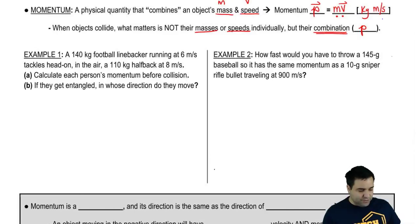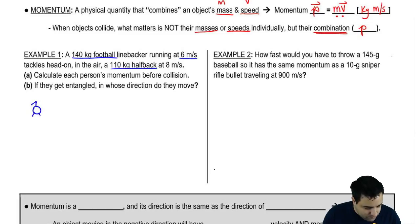So we're going to do two quick examples here just using that equation. So I have a 140 kg football linebacker running at 6 meters per second, and he's going to tackle head-on in the air this other guy here. So two guys of different masses. I'm going to make this one like a little bit bigger. Looks like a baby. So this guy has a mass of 140 kilograms, and he's moving this way with 6 meters per second.